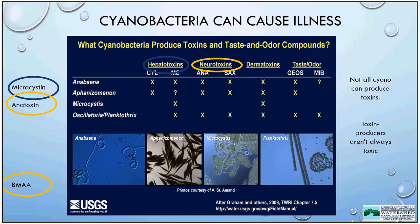The four genera shown on the slide — Anabaena, Aphanizomenon, Microcystis, and Oscillatoria — are all found in Vermont and are among the more common cyanobacteria genera in North America. Some, like Anabaena, can produce more than one kind of toxin; others, like Microcystis, are only known to produce one. Again, you can't tell whether a cyanobacteria bloom is toxic by looking at it, so to stay safe, we recommend staying clear of them.